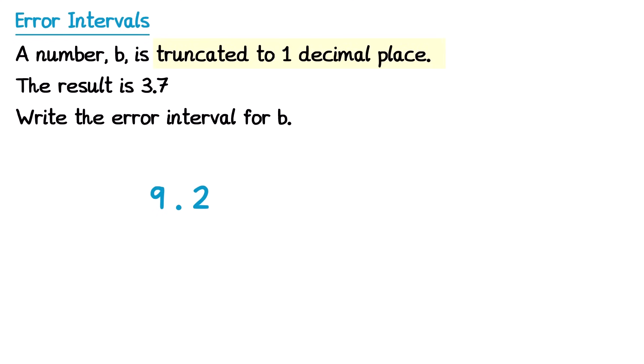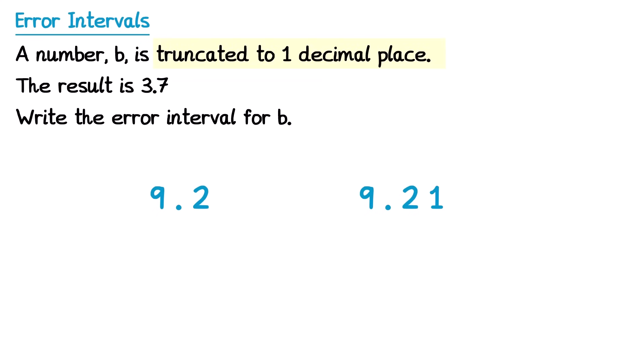If we took this number again but truncated it to two decimal places, we draw the line after the second decimal place and chop there, and all of those numbers fall off. So we'd end up with 9.21. Truncating is a bit like rounding, but it's also different, because the numbers never round up or down — you just chop off some of the remaining digits.